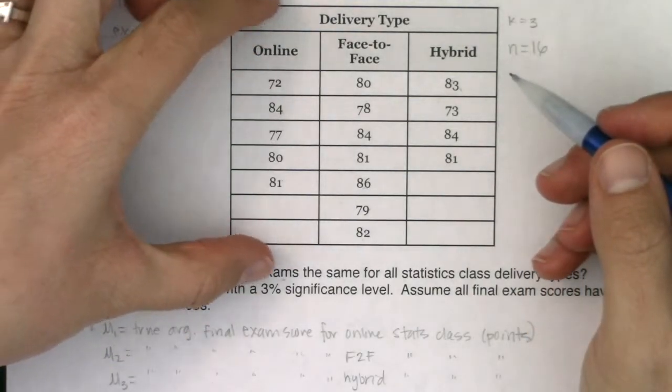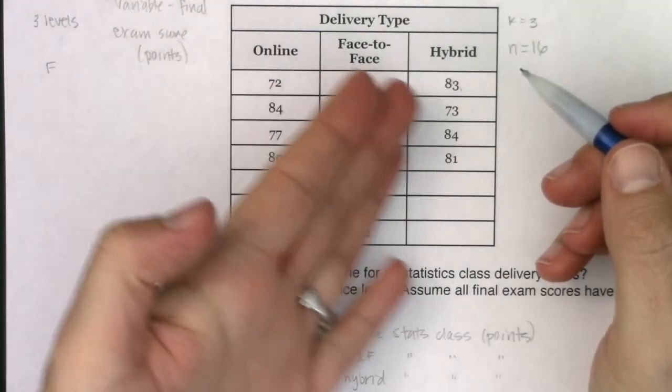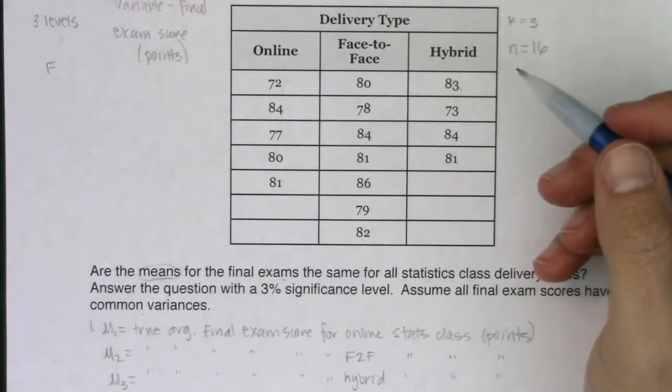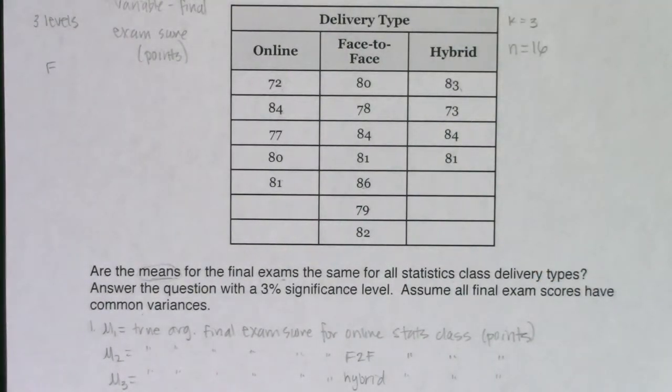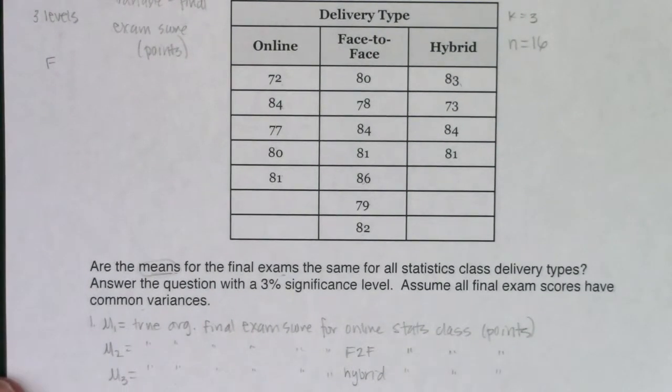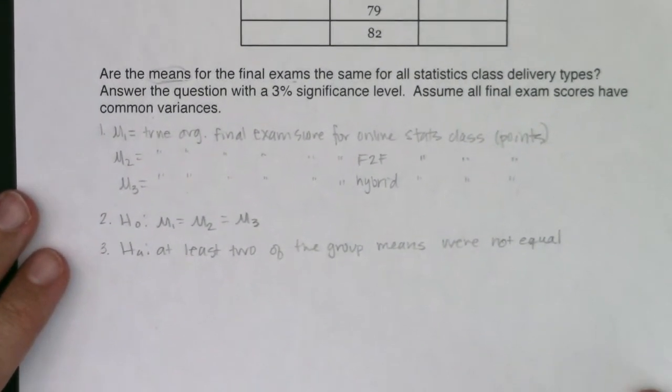So these two seem like they could be equal, just by chance. Or I could see this data just by chance pending the null was true. Here we're going 73 to 84. So the 73 would bring the average down a little bit. But again, this would still be high 70s, low 80s. So at this point, I'm leaning more towards failing to reject the null. I think that if the true means were all equal to each other, I could see this sample data just by chance. It seems kind of in line with that. So I have a feeling I'm going to fail to reject the null.